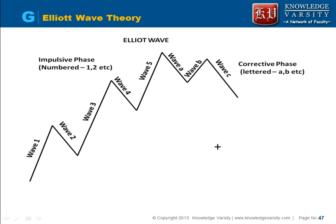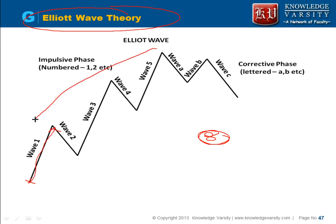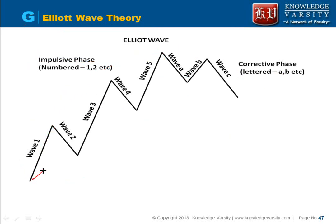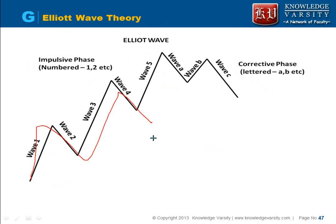The Elliott Wave cycle is divided into 8 parts. First is the impulsive phase, where stock prices increase, numbered 1 through 5. Then there is a corrective phase where stock prices decrease, labeled A, B, C. The stock price does not increase in a straight line during the impulsive phase — it increases, decreases, increases, decreases, forming waves.